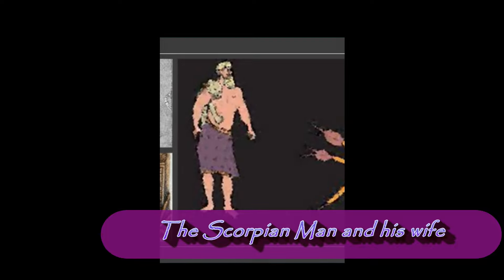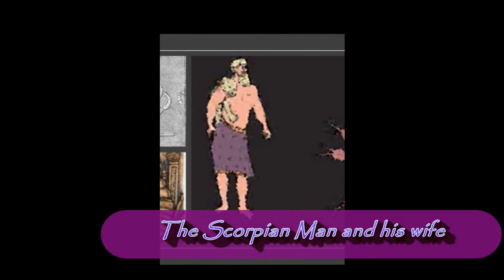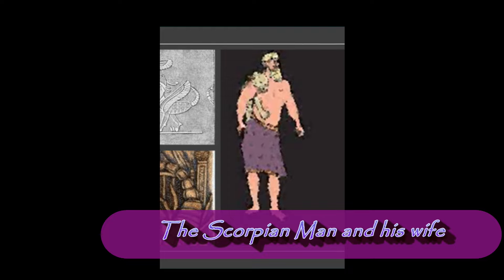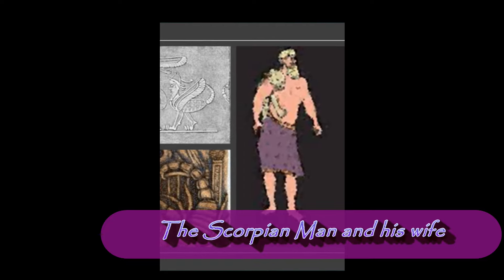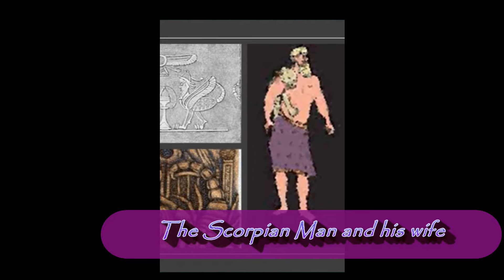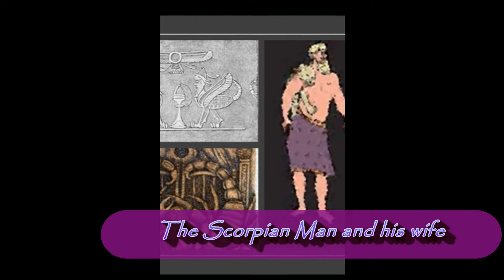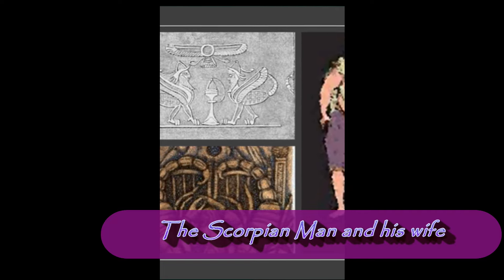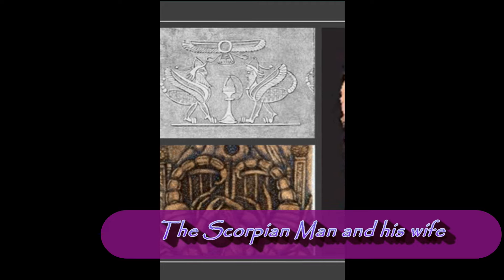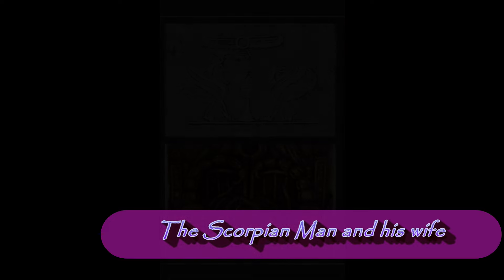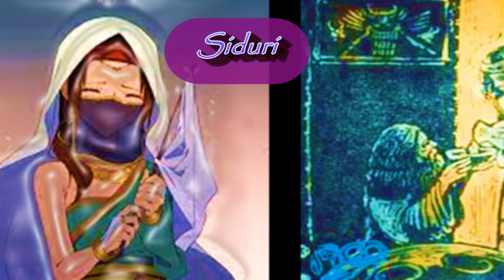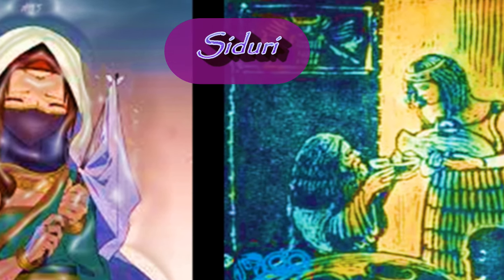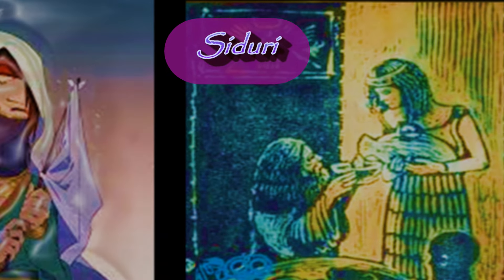We also meet the Scorpion Man. The Scorpion Man and his wife are guardians of the twin-peaked mountain called Mashu — the mountain that the god Shamash travels through in order to cause sunrise and sunset. We also meet Siduri, the goddess of winemaking and brewing. She's a veiled tavern keeper in this story who comforts and helps Gilgamesh on his journey for immortality.